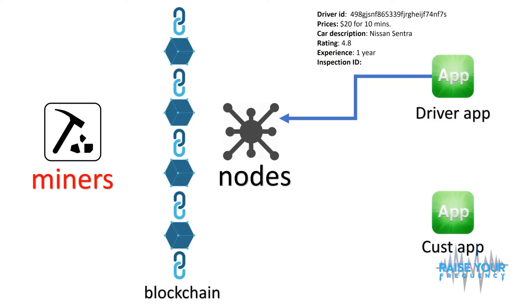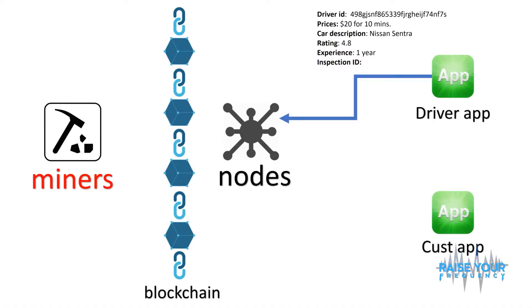It's really up to the developer or programmer who produces this. For example, an inspection ID — like regular taxis go through some kind of inspection to prove the car is safe. You could bring your car for an inspection if you're giving rides, and that ID could be included too. And once the customer pays, that could be built into the transaction and verified, making it scam-resistant.